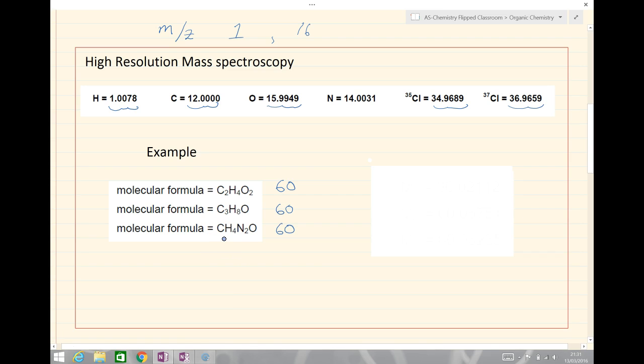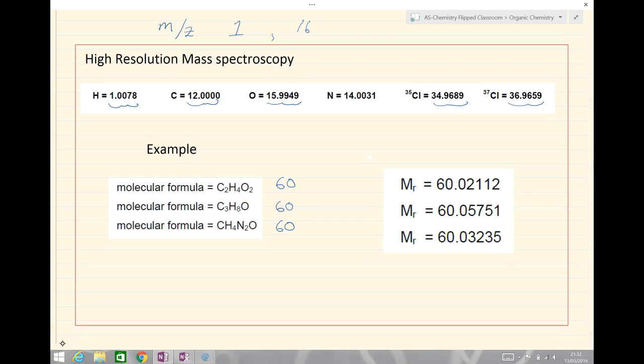The result, as we look here in just a moment at the high resolution mass spectroscopy, is three slightly different values. Here then what we see, we have an MR of 60.02112.